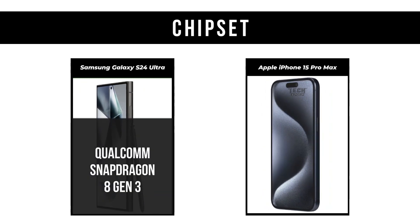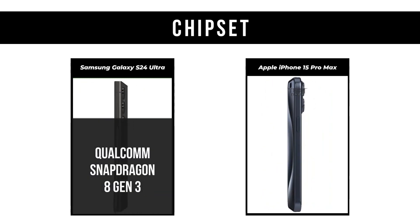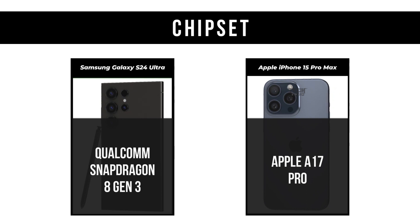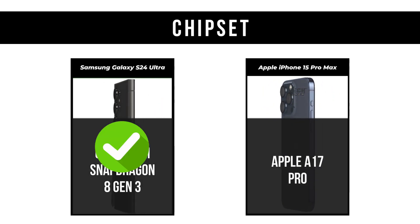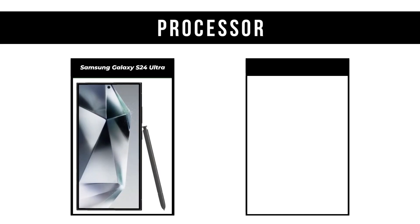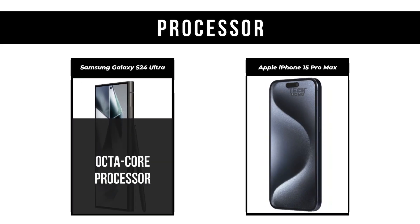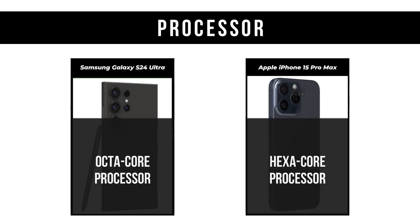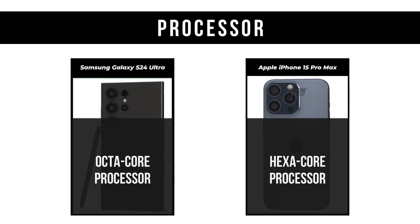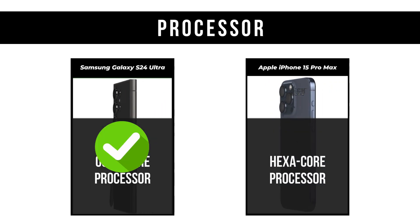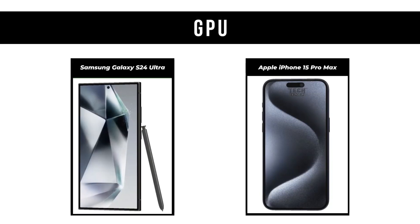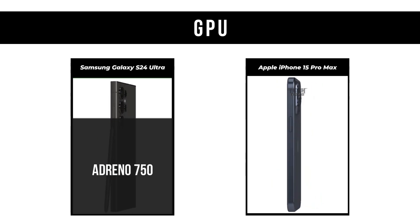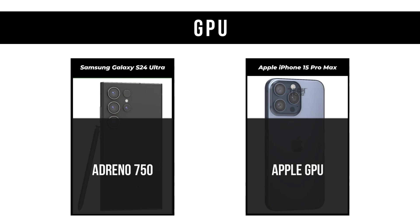Chipset: Samsung Galaxy S24 Ultra is Qualcomm Snapdragon 8 Gen 3; Apple iPhone 15 Pro Max is Apple A17 Pro. Processor: Samsung Galaxy S24 Ultra is Octa-Core; Apple iPhone 15 Pro Max is Hexa-Core. GPU: Samsung Galaxy S24 Ultra is Adreno 750; Apple iPhone 15 Pro Max is Apple GPU.